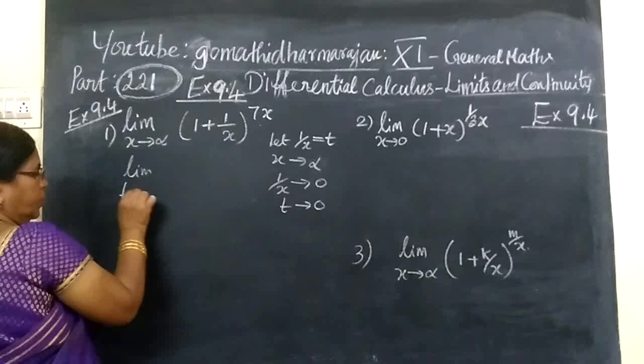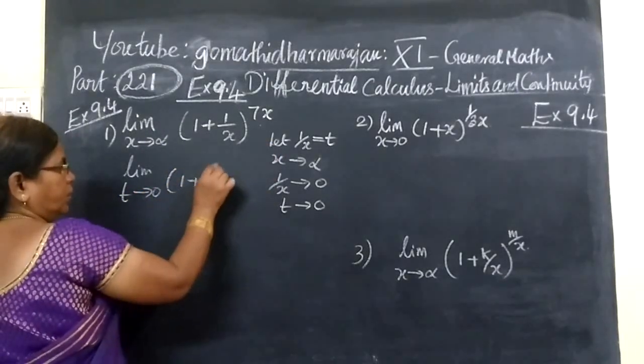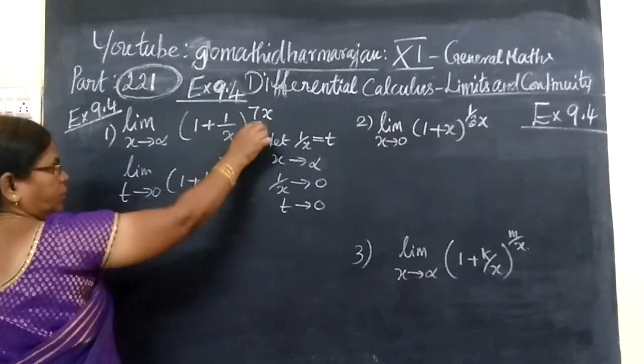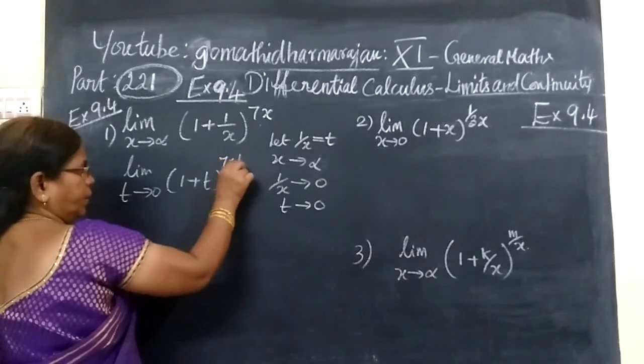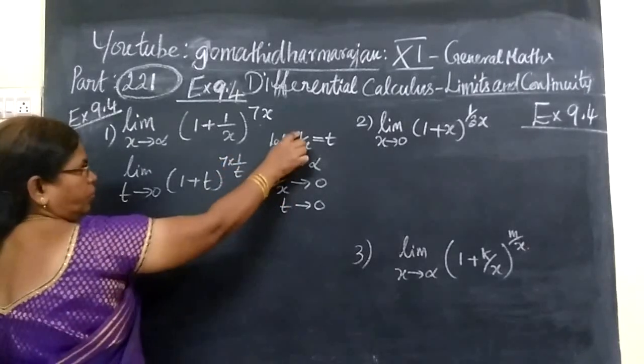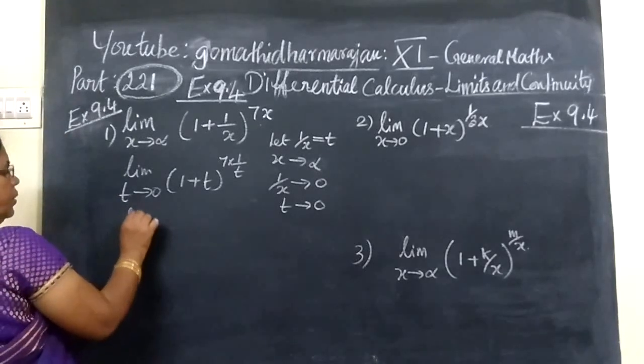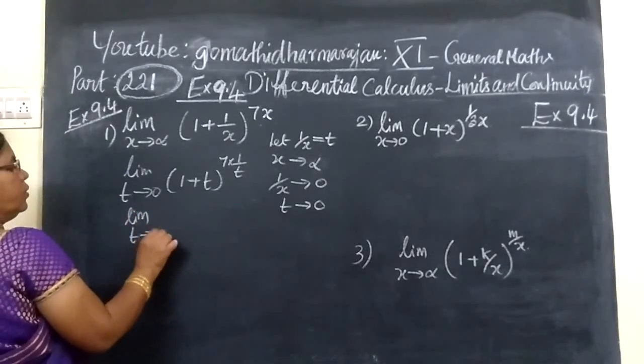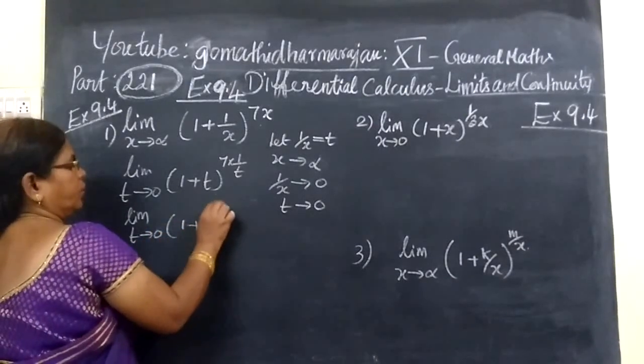We know x tends to infinity means t tends to 0, and 1 plus, instead of 1 by x, you are writing t.